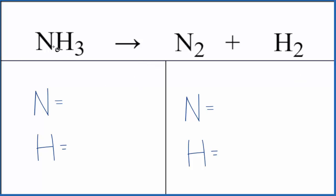Count the atoms up on both sides. We have one nitrogen and three hydrogens in the reactants. In the products, we have two nitrogens and two hydrogen atoms. Probably a good idea to get this hydrogen to an even number. We can do that by putting a two in front of the NH3.